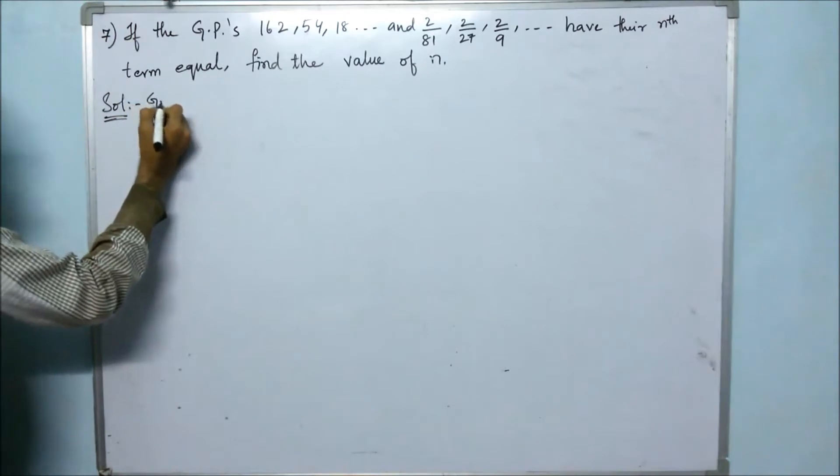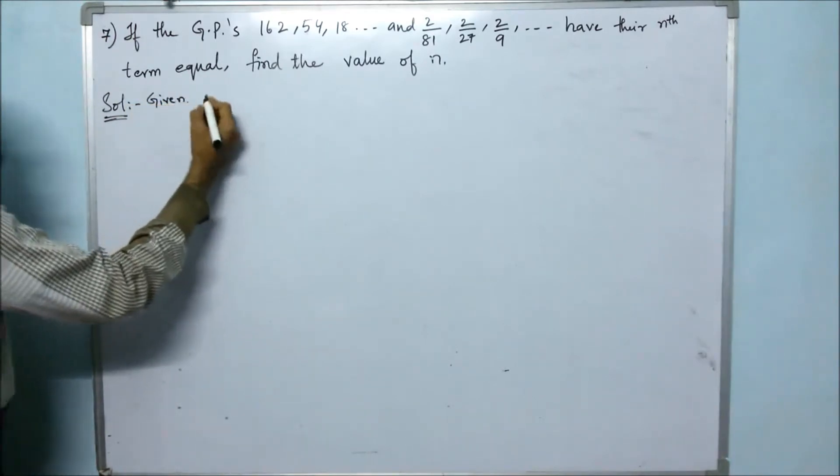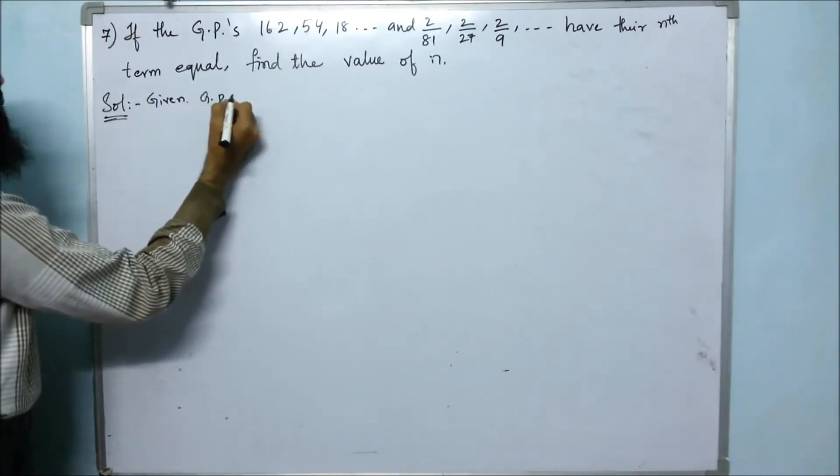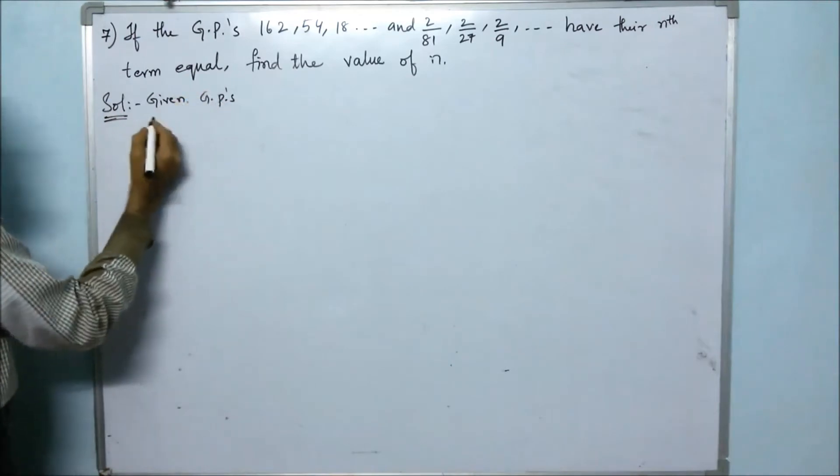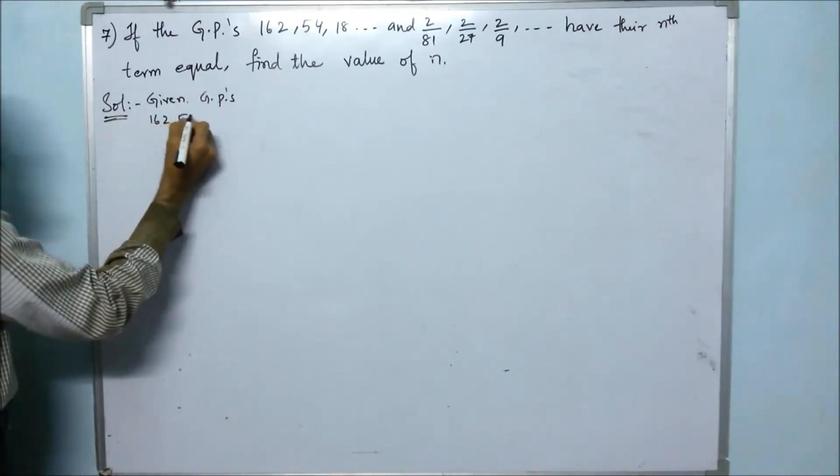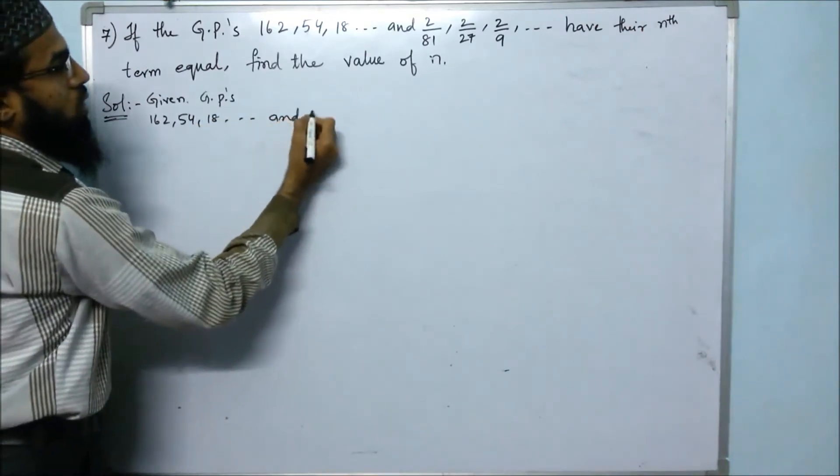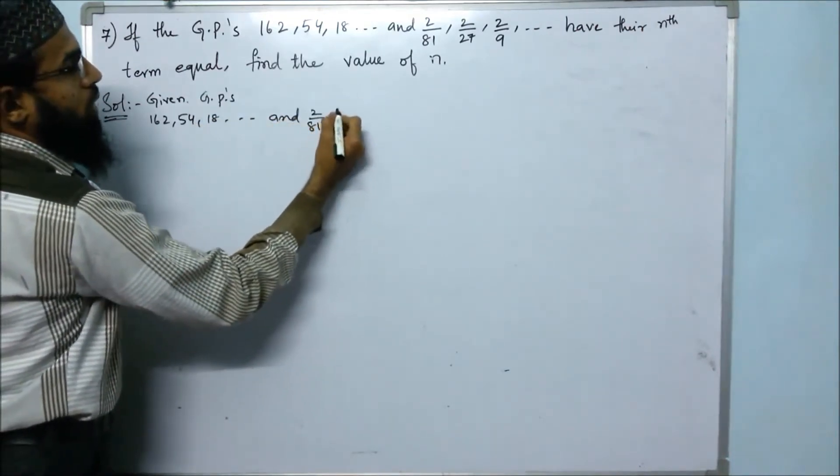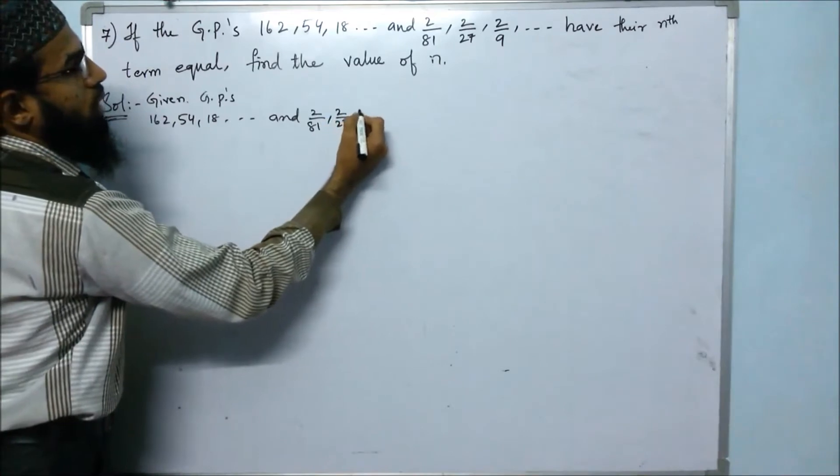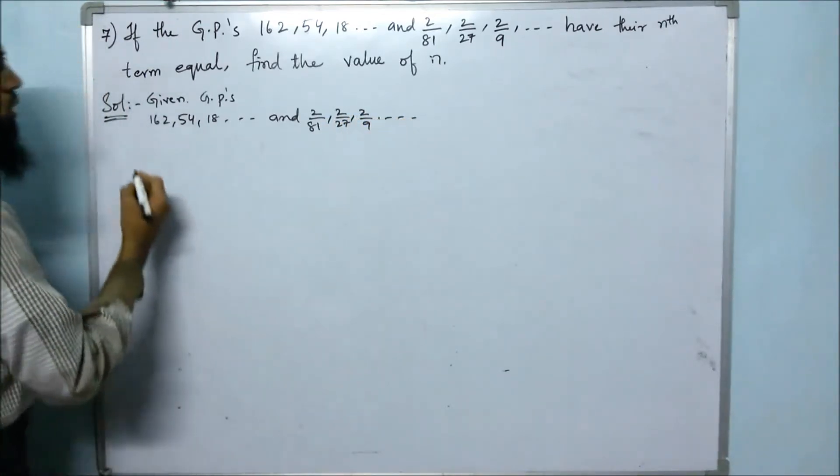Let us write the given GPs. The GPs are: 162, 54, 18, and so on, and 2/81, 2/27, 2/9, and so on.